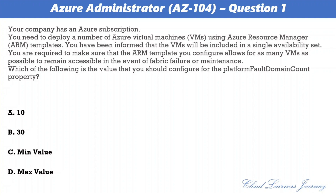The correct answer is maximum value. Each virtual machine in an availability set is assigned an update domain and a fault domain by the underlying Azure platform. Each availability set can be configured with up to three fault domains and 20 update domains.